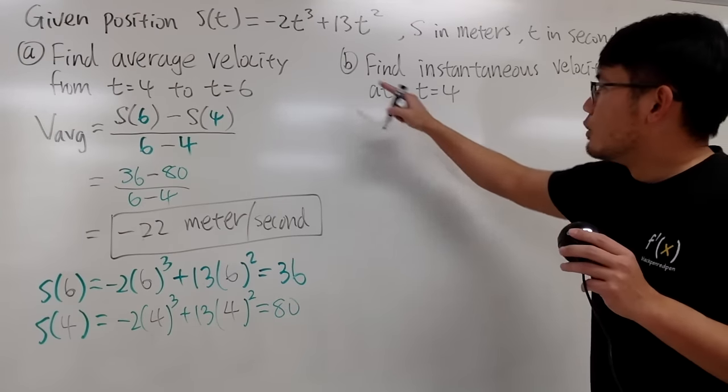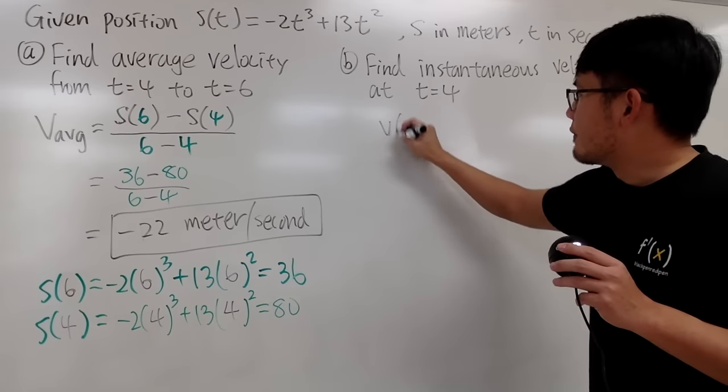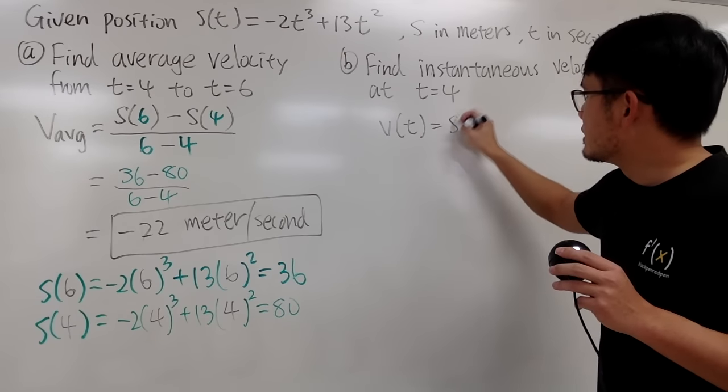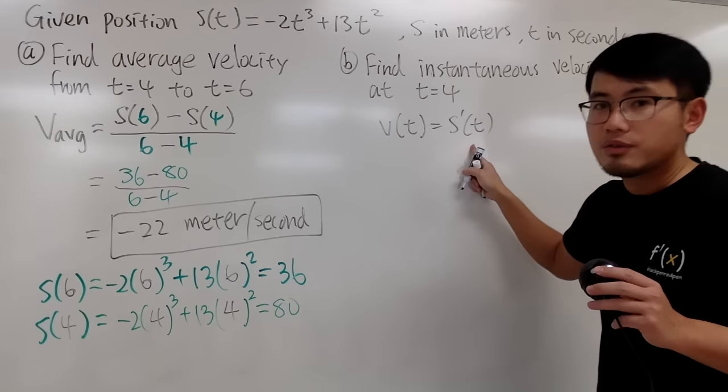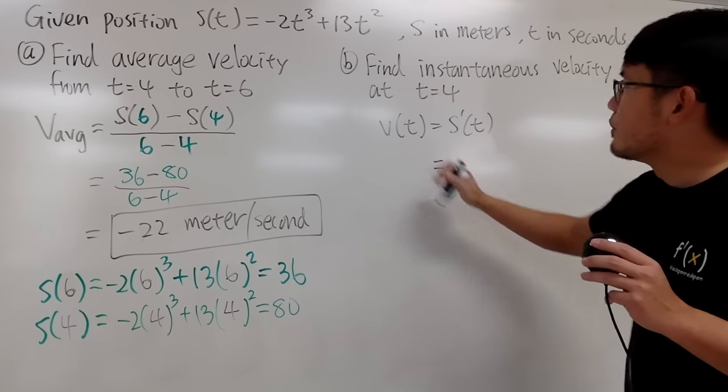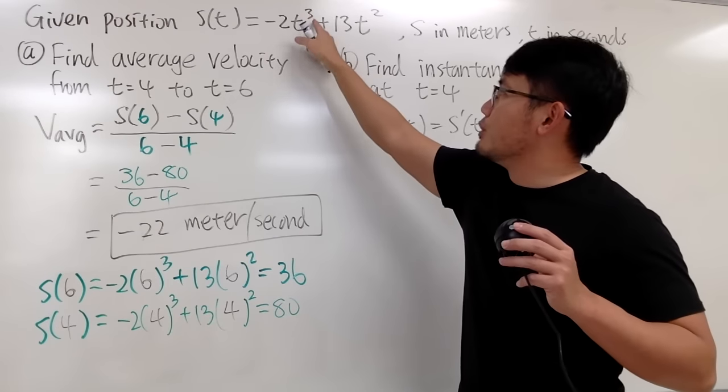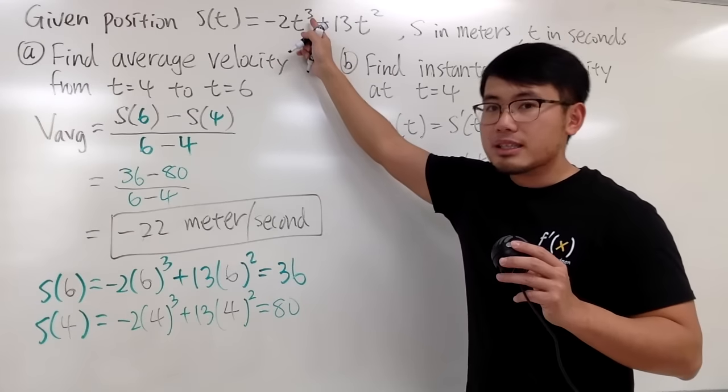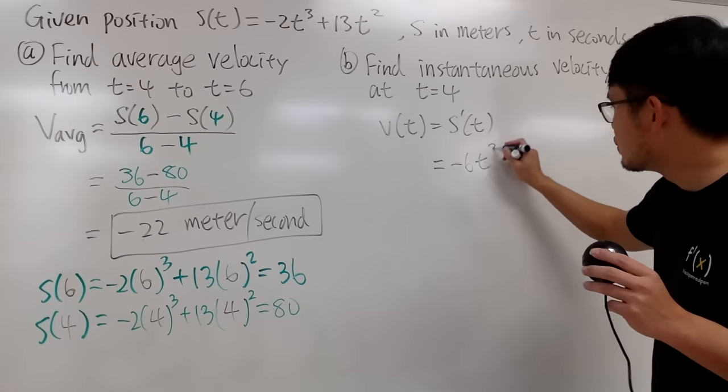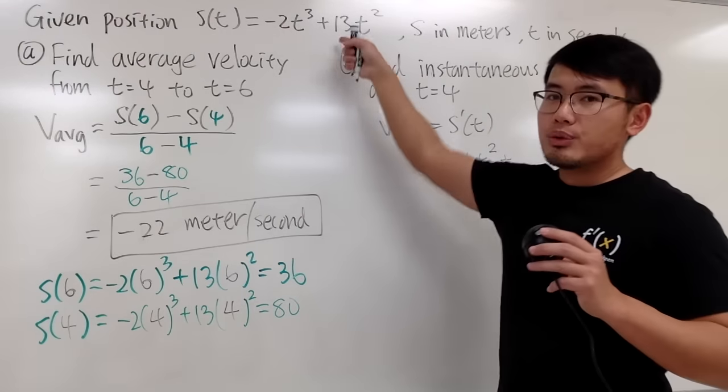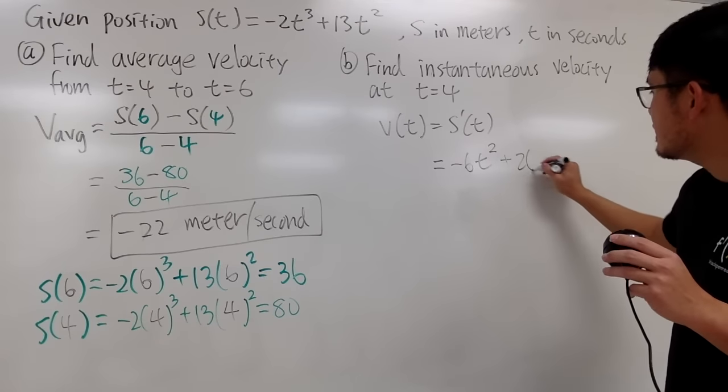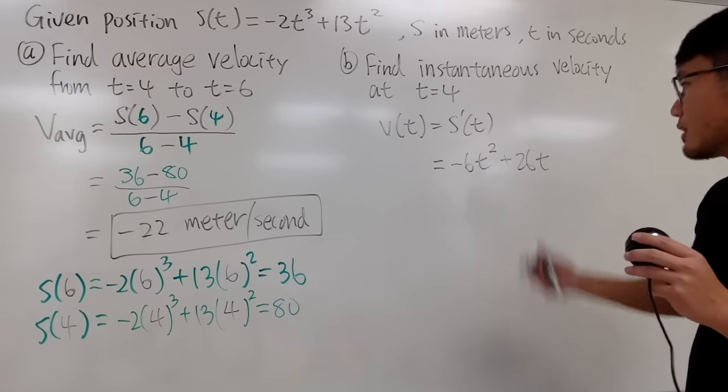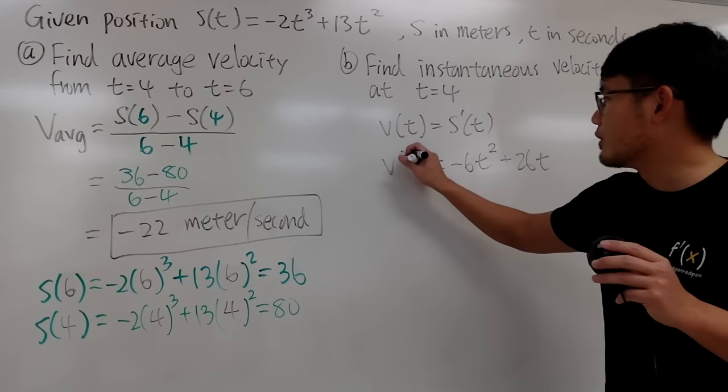All right, so right there, I will just write down v of t, which is just the derivative of the position function. Well, if you look here, you can just bring the 3 to the front, and you have negative 6t, minus 1 to the power, so we have the square here. And then we add, bring the 2 to the front, which is going to be 26t to the first power. So that's pretty much the idea. So this is v of t.